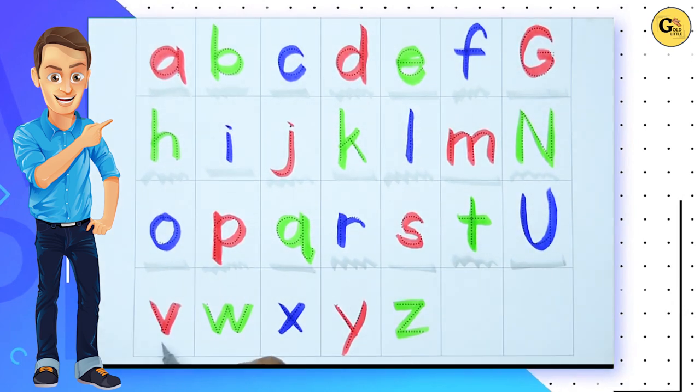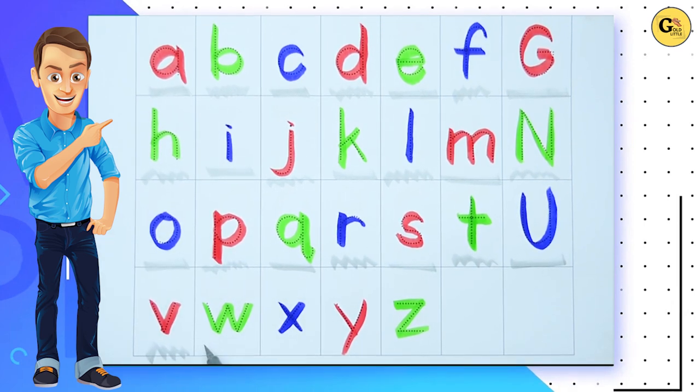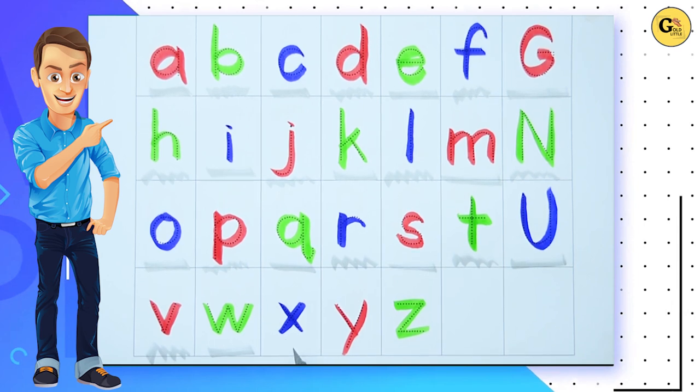U. U for umbrella. V. V for wand. W. W for watch.